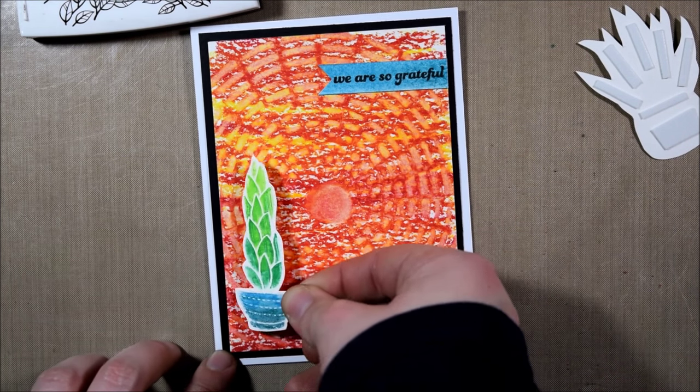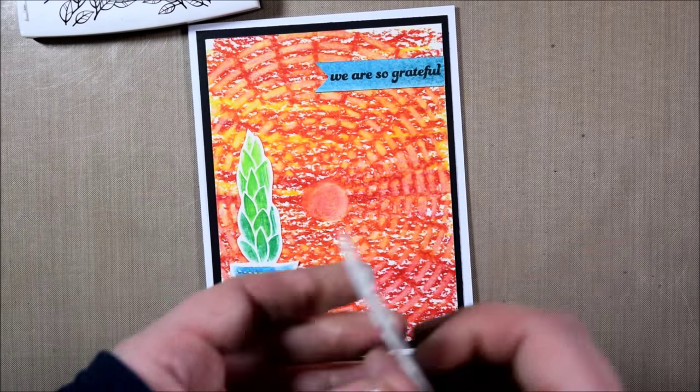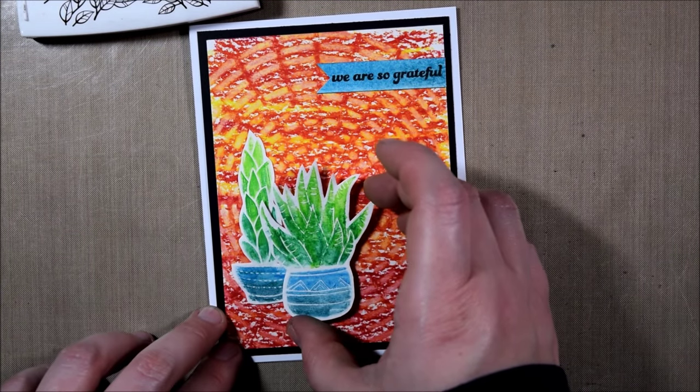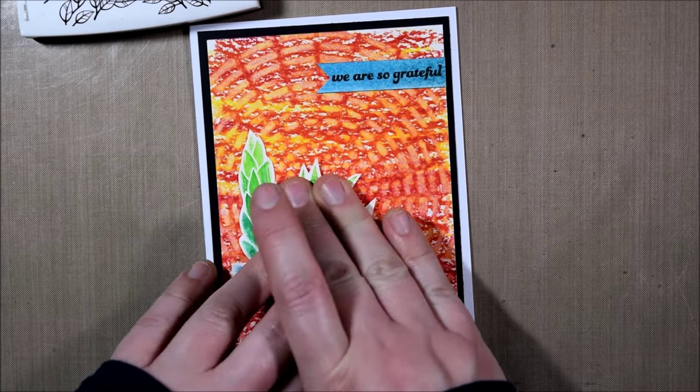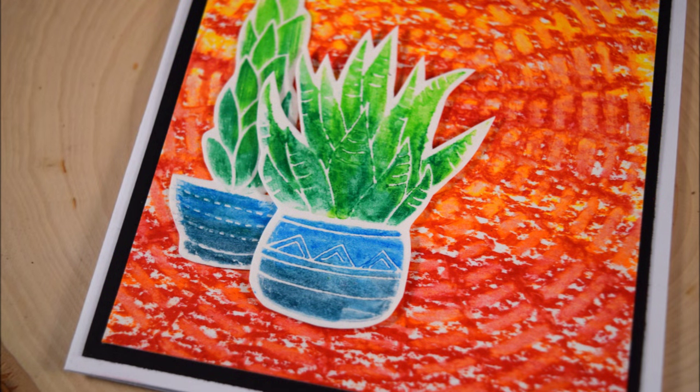As mentioned, I'm going to put the succulents in the bottom left-hand corner and the sentiment in the top right, just so they sort of counterbalance each other. I wanted to keep the card relatively clean in terms of not adding too much on top, so that that background that we originally created would really be a star of the show and really those greens and blues pop out against it.